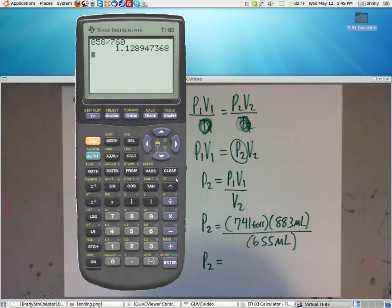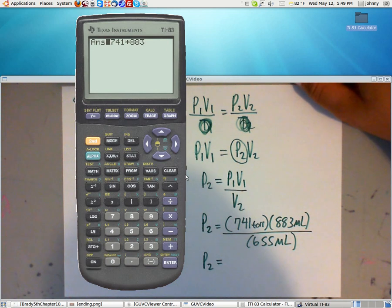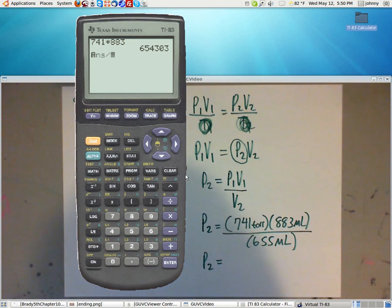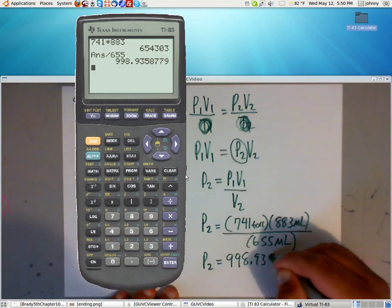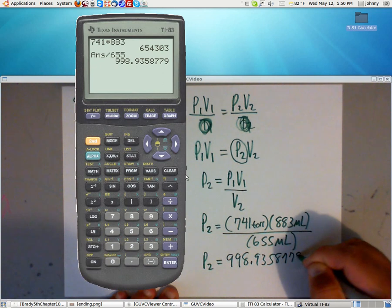Alright, turn the calculator on. And we said we punch in 741 times 883, and we will divide that by 655, and we would get 998.9358779.